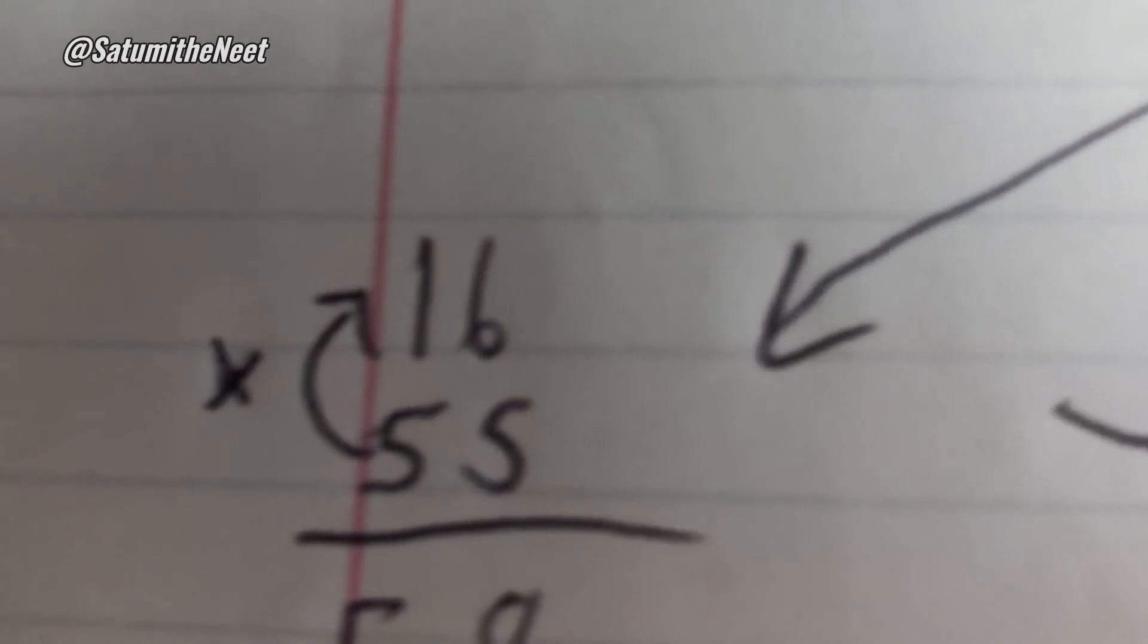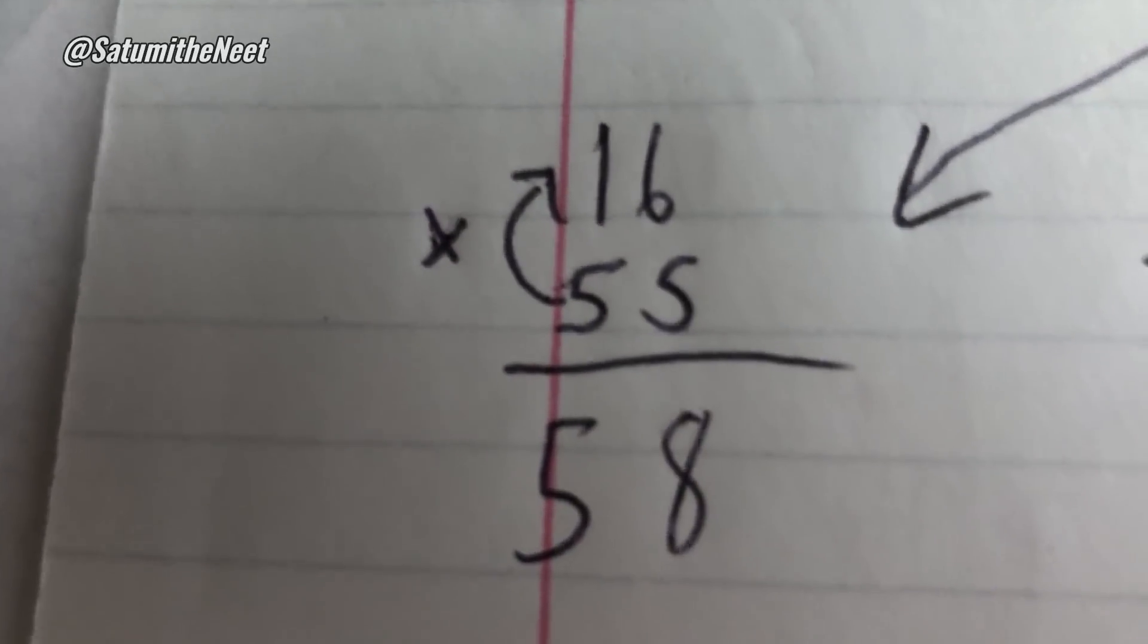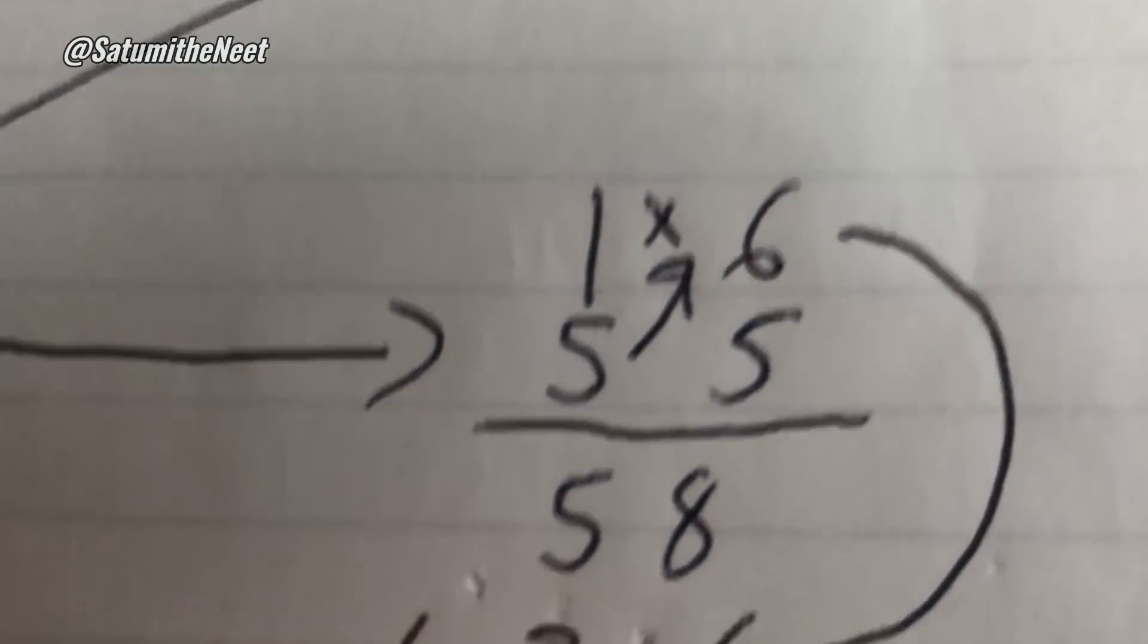So then we multiply from the other column. You take the 5 and multiply the 1, which is 5. Then you cross multiply to 6 to get 30.